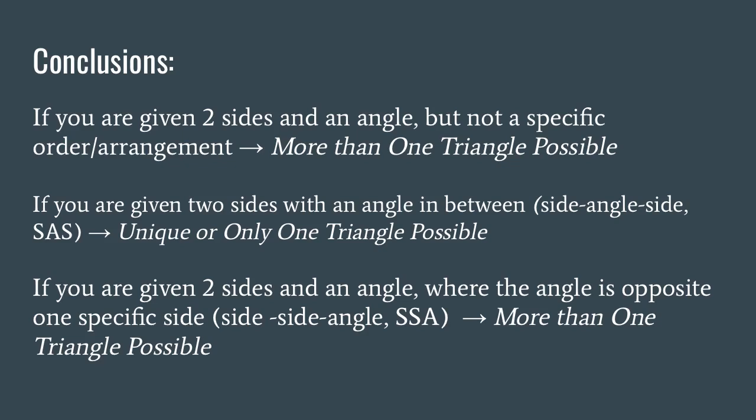So what can we conclude? When given two sides and an angle, if you're not given a specific order or arrangement, then more than one triangle is possible. We saw that we had three separate groups, and each of them fit the categories of a 30-degree angle combined with a side of 5 and a side of 7. Since there was more than one combination, this situation results in more than one possible triangle — a non-unique triangle.